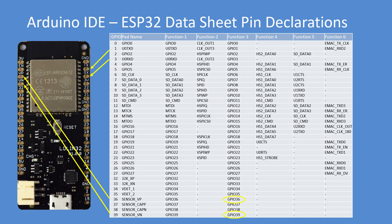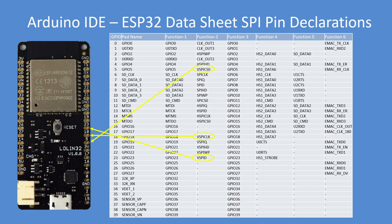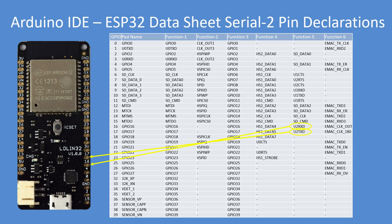SPI pin declarations are always difficult to find. These are the recommended GPIO pins by the manufacturer for SPI data, clock, and chip select. Similarly for Serial2, they're on pins 17 and 16, or GPIO 17 and 16 on this board.